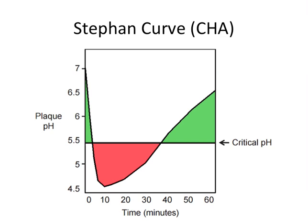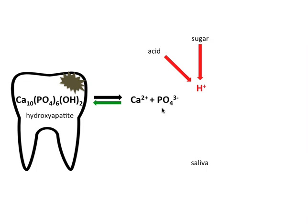Hey guys, it's Ryan. Let's pick up where we left off. We just talked about demineralization in the last video. We looked at the Stephan curve and how the area under the curve underneath the critical pH refers to demineralization, which would be a leaching of mineral from the tooth surface. But now let's talk about remineralization — the opposite effect of restoring minerals to the tooth surface.